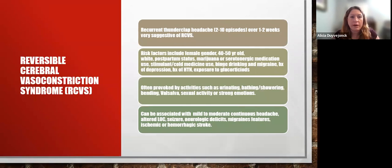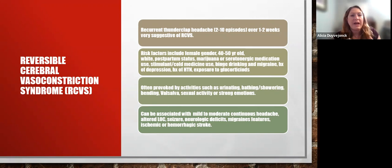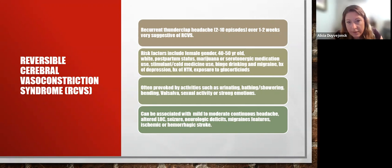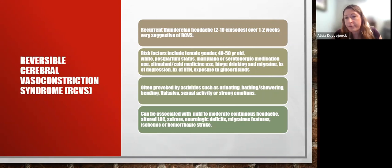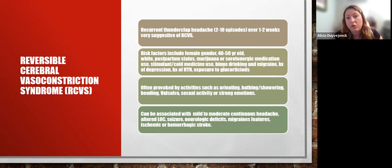RCVS typically presents as recurrent thunderclap headache — classically two to ten episodes over one to two weeks. If your patient has recurrence of thunderclap headache over time, RCVS is statistically your most likely problem. Risk factors include female gender, ages 40–50, Caucasian, postpartum status, marijuana or serotonergic medication use, stimulant or cold medication use, binge drinking, migraine patients, history of depression, hypertension, and exposure to glucocorticoids.